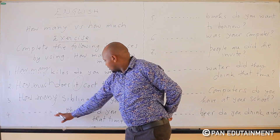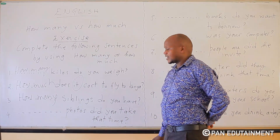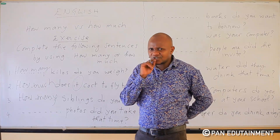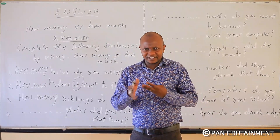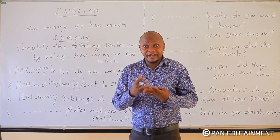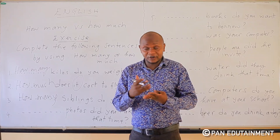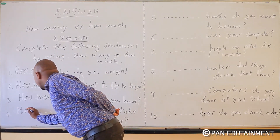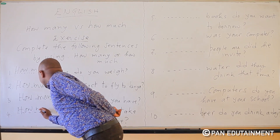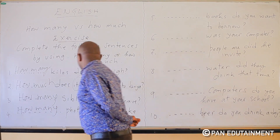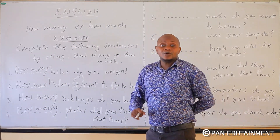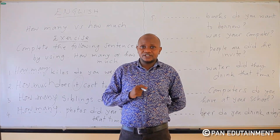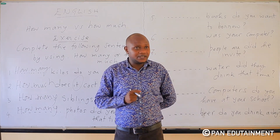Number four: blank photos did you take that time? Don't say how much photos. Photos are countable, so we are going to put how many. How many photos did you take that time? We put how many here.